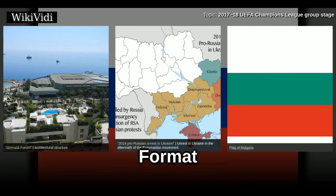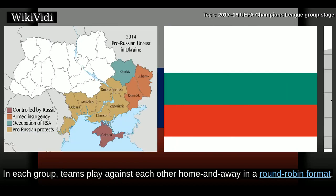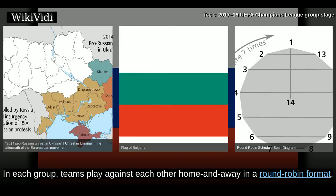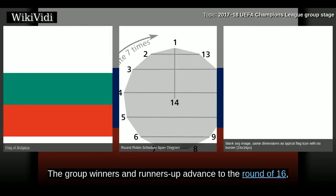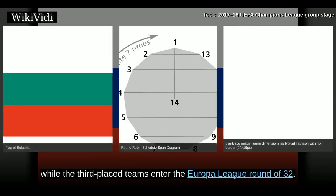In each group, teams play against each other home and away in a round-robin format. The group winners and runners-up advance to the round of 16, while the third-placed teams enter the Europa League round of 32.